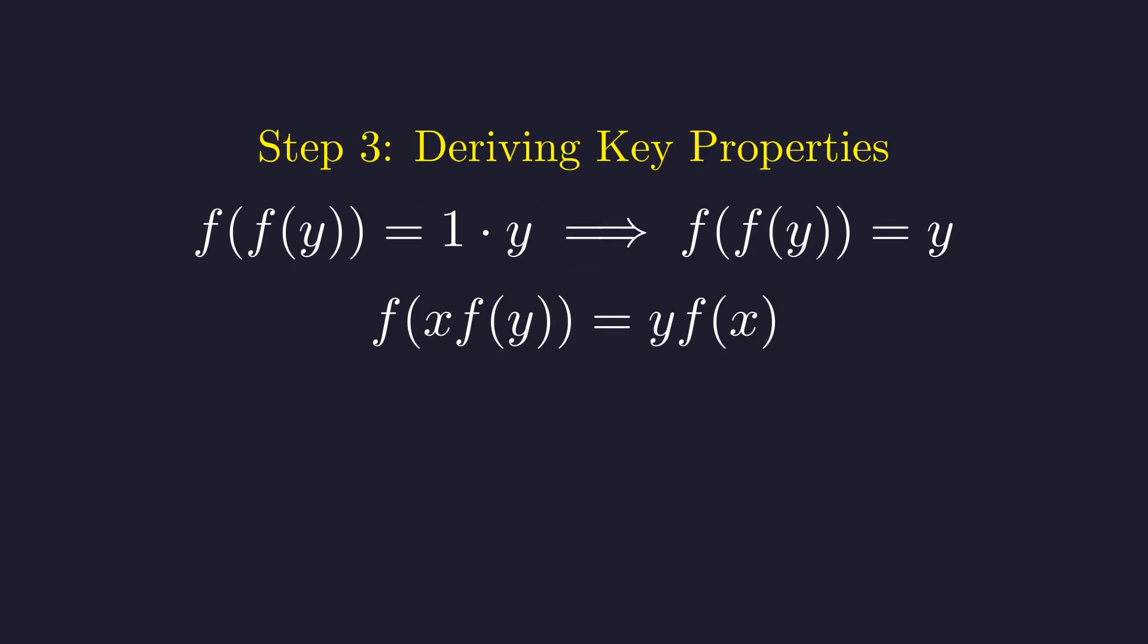Let's return to the original equation one last time. We can now replace y on the right side with f of f of y. This form looks very structured, doesn't it? Let's make one more clever substitution. Let z equal f of y. Since we proved f is surjective, any positive real number z can be expressed as f of y for some y. This makes our substitution valid for all positive z. And there it is. This gives us the multiplicative form of Cauchy's functional equation.